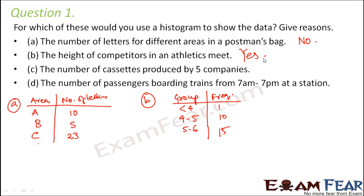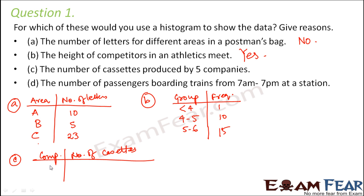Scenario C: the number of assets produced by five companies. Here you have company names like X, Y, Z and the number of assets they produced. You cannot create groups from this data, so there is no grouped frequency distribution and therefore no histogram.